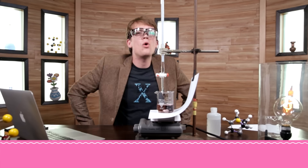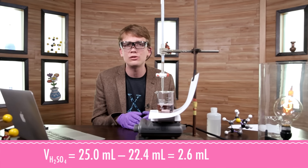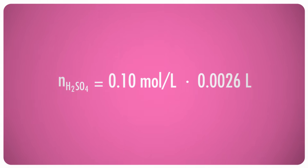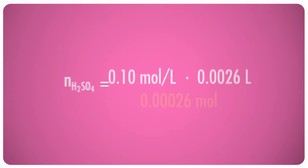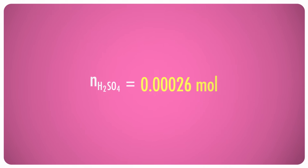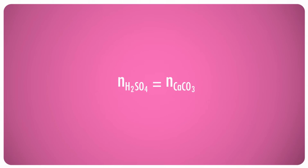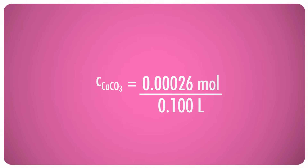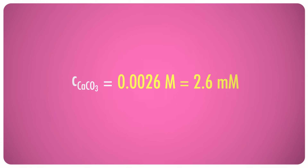The volume in the burette is now 22.4 milliliters, meaning that I used 2.6 milliliters or 0.0026 liters of the acid solution. The acid solution is 0.1 molar. So multiplying these numbers together tells me that I used 0.00026 moles of H₂SO₄. Sulfuric acid reacts in a one-to-one ratio with calcium carbonate, so assuming that calcium carbonate is the only buffer in the water, the 100 milliliters of river water must also contain 0.00026 moles of calcium carbonate — making it a 0.0026 molar, or 2.6 millimolar, solution. I'm a big fan of protecting the environment, but sometimes it is amazing to see what nature can do to protect itself. We live in an amazing world, and I wouldn't trade it for anything. Not even Mars.